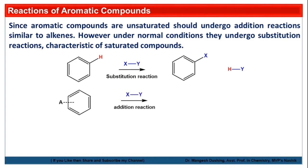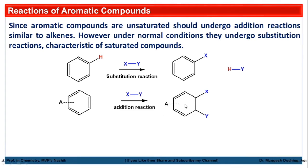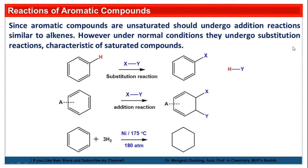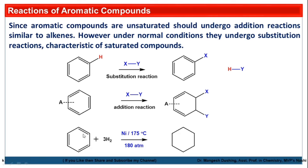If we reacted benzene with a reagent and it shows an addition-type reaction, this compound loses its aromatic character. Because of losing aromatic character, the substrate becomes unstable — that's why aromatic compounds don't show addition-type reactions under normal conditions. In extreme conditions, benzene also shows addition reactions. For example, benzene reacted with molecular hydrogen in the presence of nickel at higher temperature and pressure — around 170–175°C and 180 atmospheric pressure — results in reduction, where hydrogen is added to the unsaturated double bonds to form saturated single bonds.